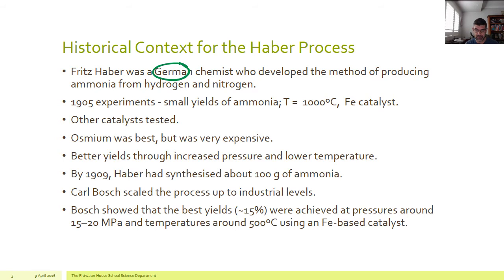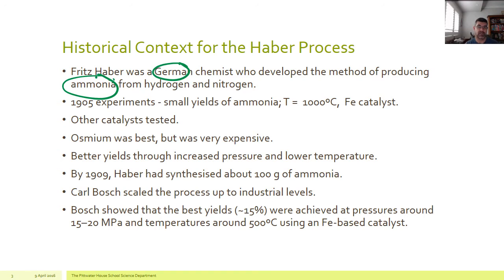There was a lot going on at the time that was impacting the German people and also the British and the Allies. We need to identify that Fritz Haber's discovery was the development of the production of ammonia from hydrogen and nitrogen. You can address that simply with the use of a chemical equation — always write an equation to represent the Haber process.